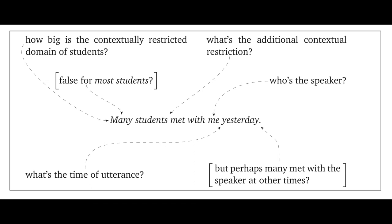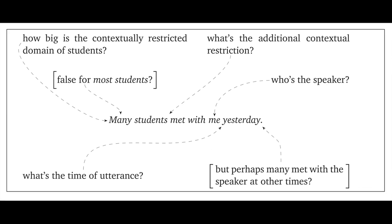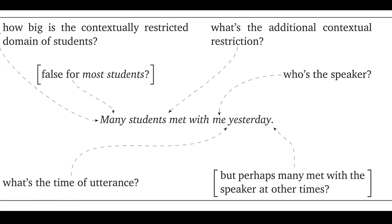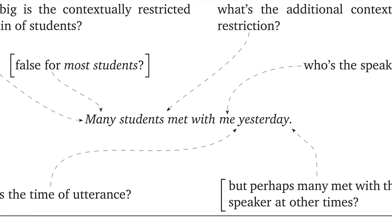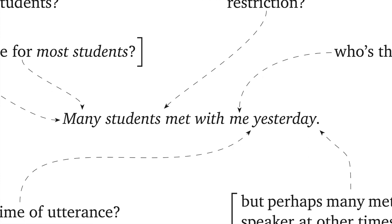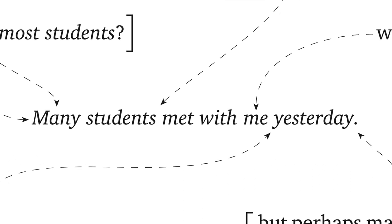To round out this first screencast, let's return to Levinson's analogy. Consider the sentence: 'Many students met with me yesterday.' It seems like a straightforward and not too complex sentence, but now reflect on how much pragmatic reasoning one needs to employ to understand it. What's the time of utterance? Who's the speaker? What does 'student' range over? How big is the domain? Why didn't the speaker say 'most students'? What are the intended meanings conveyed for times other than yesterday? This is just a small sample of the pragmatic dependencies and pragmatic meanings that this sentence could involve. It's really amazing that we can communicate at all with language. In the next screencast, we'll try to use Gricean ideas to explain how it all actually happens.